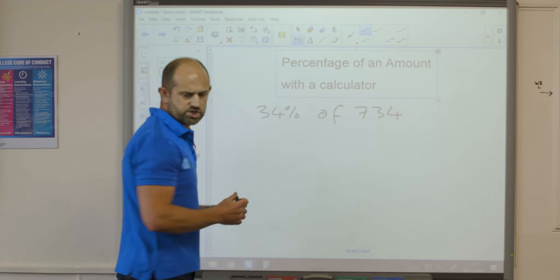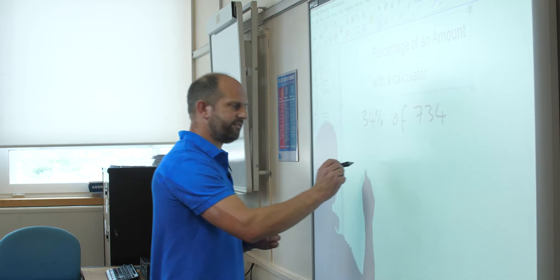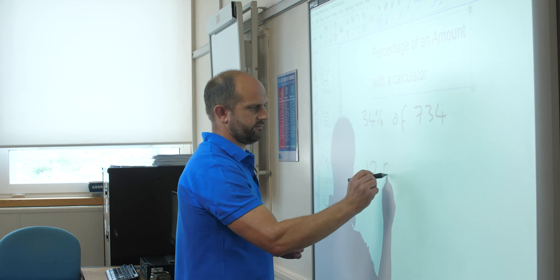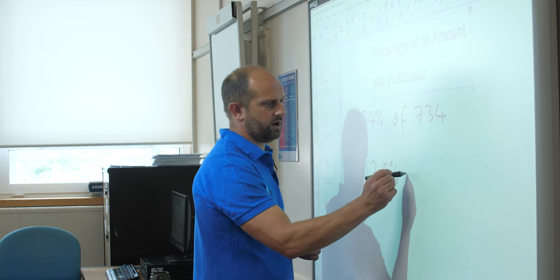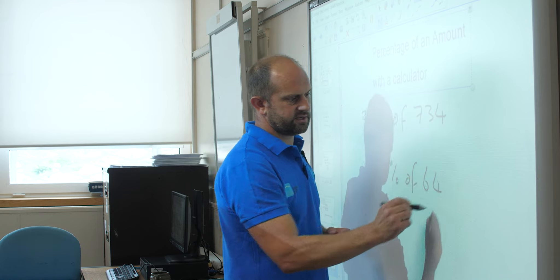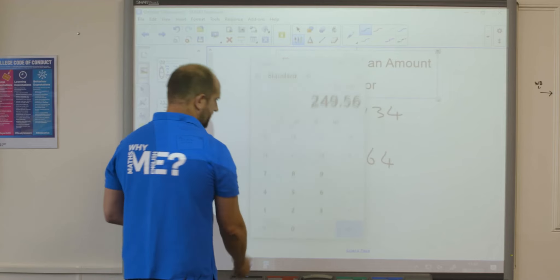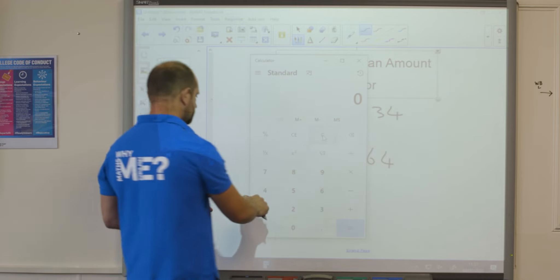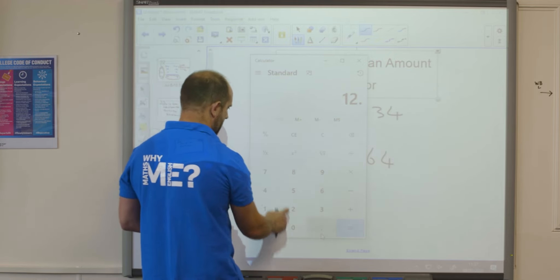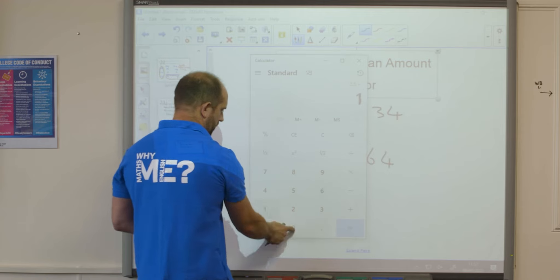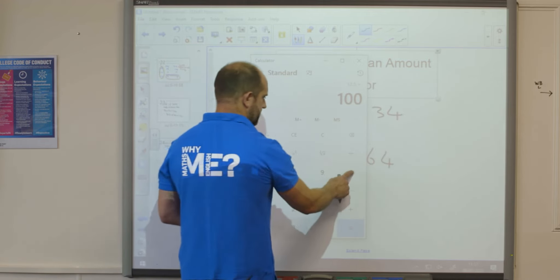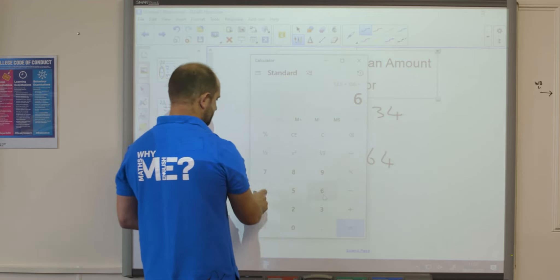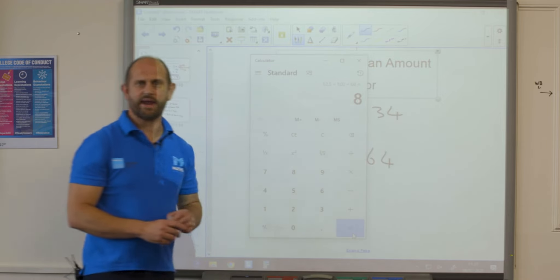Different question. Let's find 12.5 percent of 64. Calculator back up. Clear the previous answer. I can do 12.5 divided by 100 times by 64 equals 8.